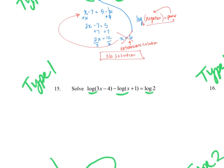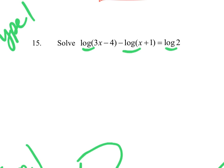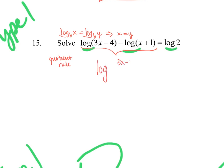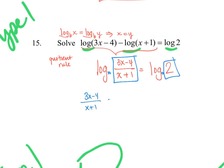For Type 1 question 15, logs appear on everything, but we have subtraction, so it's not yet in the single-log-equals-single-log form. Using the quotient rule, we rewrite it as a single logarithm: log of (3x minus 4) over (x plus 1) equals log 2. Now both sides have the same base — base 10, the common log — so the arguments must be equal: (3x minus 4) over (x plus 1) equals 2.